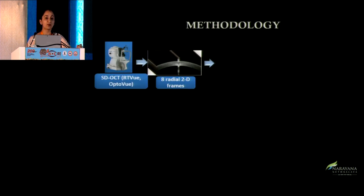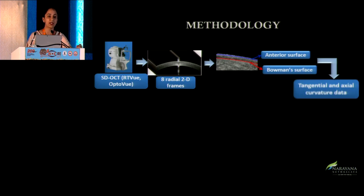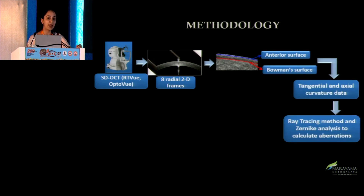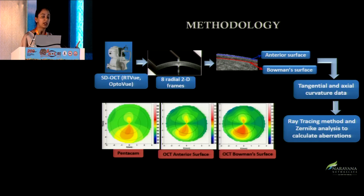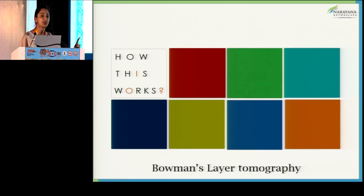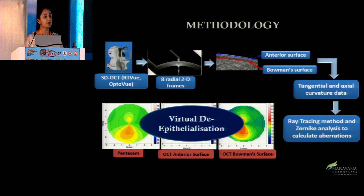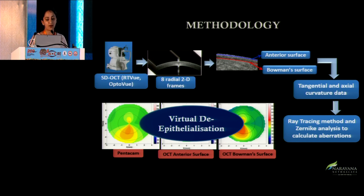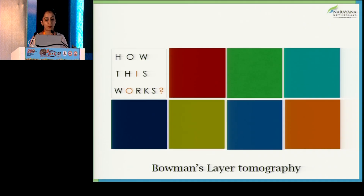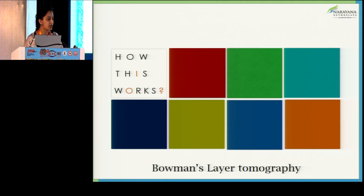What we do is capture images on the ST-OCT and apply the canny edge detection method. In the image, the blue line demarcates the anterior surface and the red line is Bowman's layer. In our attempt to virtually de-epithelize, we study the topography at the level of the red line, then look at tangential axial curvature data and ray tracing analysis to get the Bowman's topography compared to what the Pentacam provides.